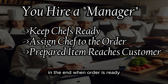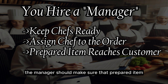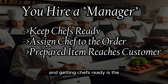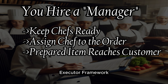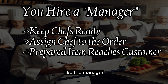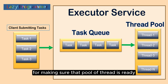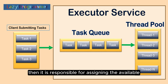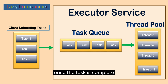The duty of that manager will be to keep the chefs ready, take orders from customers, and assign a chef to each order so that they can prepare the requested item. In the end, when the order is ready, the manager should make sure that the prepared item reaches the correct customer. So all in all, every task related to orders and getting chefs ready is the responsibility of that kitchen manager. Now consider the executor framework as the kitchen manager you have hired. Like the manager, the executor framework will be responsible for making sure that a pool of threads is ready, and when any task is submitted, it is responsible for assigning an available thread from the pool to perform that task.